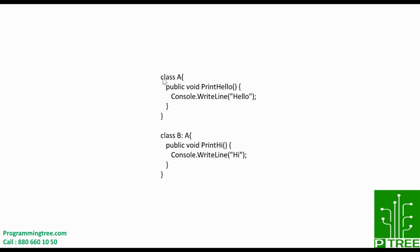In C#, we'll create class A with a body, and this class has a PrintHello method which prints 'Hello' to the console. Class B is derived from class A. In order to create inheritance in C#, you need to write a colon followed by the base class name while creating the derived class.